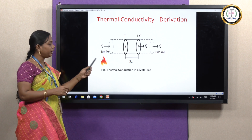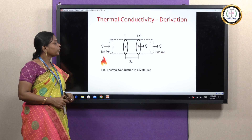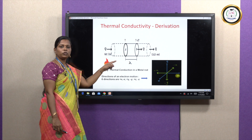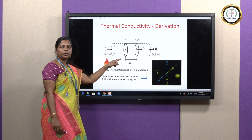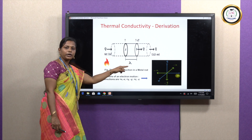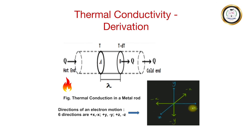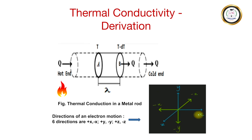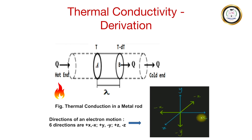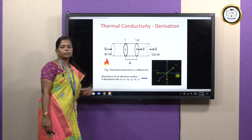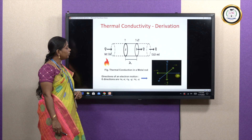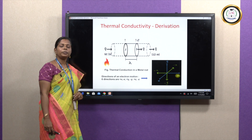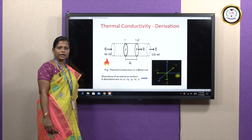In this rod, we are heating at one end — the hot end. From the hot end to the cold end, temperature is transferred. Near the hot end, I consider point A where the temperature is T. Away from the hot end, I consider point B, where the temperature is T minus dT — a temperature difference exists between points A and B. The distance between A and B is considered the mean free path.